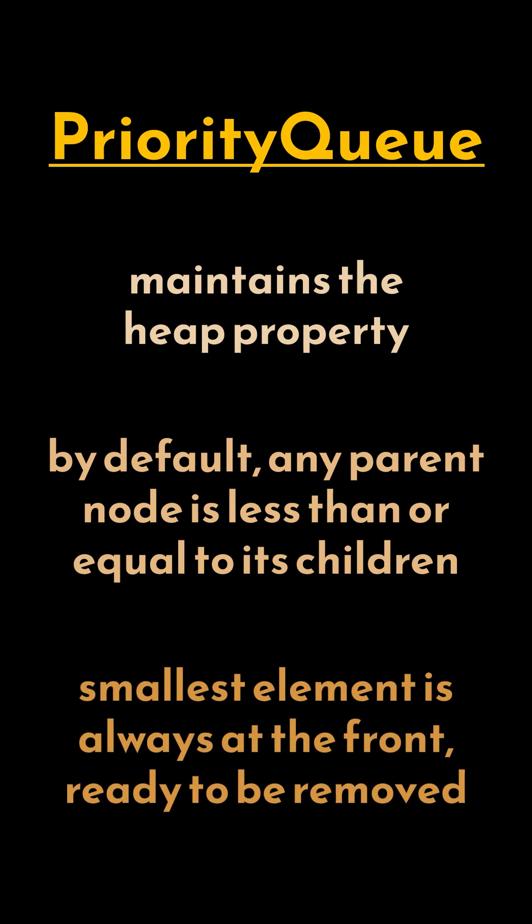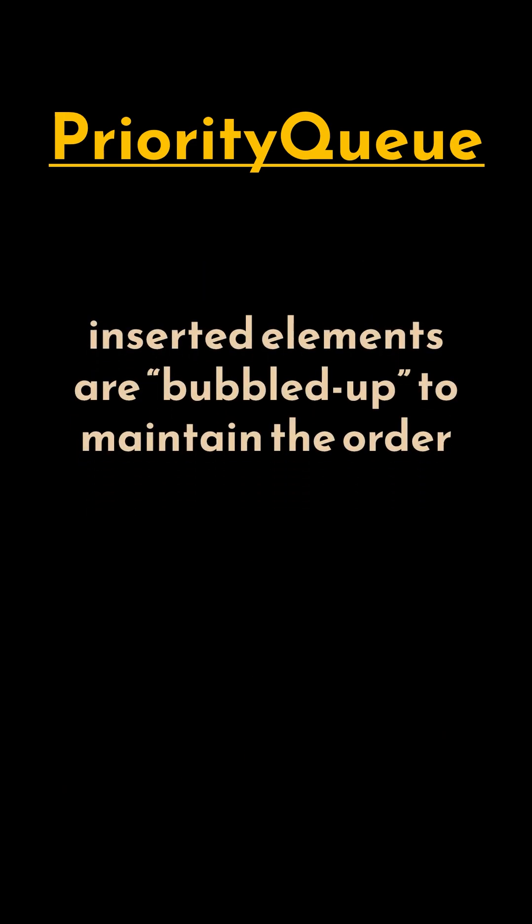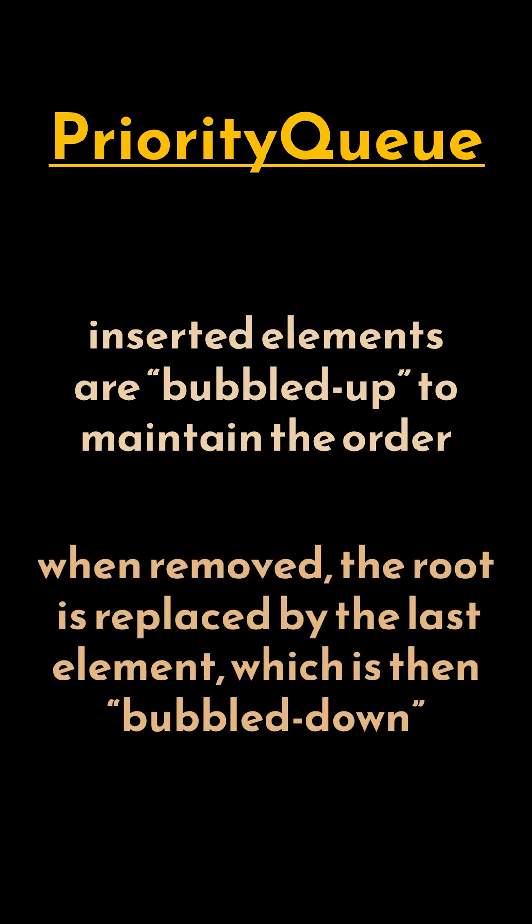This ensures that the smallest element is always at the front, ready to be removed. When inserting elements into a priority queue, we add the new element at the end of the underlying array and then bubble it up to maintain heap order. Similarly, when removing the root or the element with the highest priority, it's replaced by the last element, which is then bubbled down to ensure the heap structure remains intact.